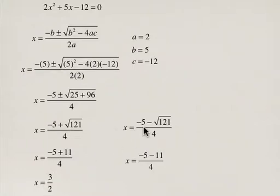And the one where it's minus square root of 121, it's going to simplify to be -4. So we have two solutions.